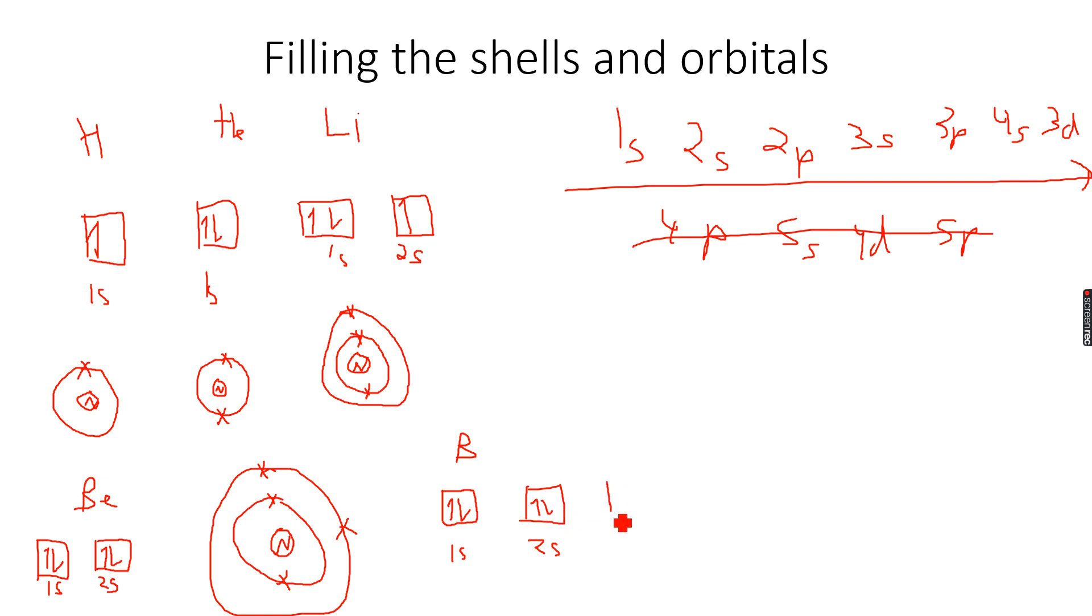Then we go to 2p. The 2p subshell has three orbitals in total. This is the 2p subshell. I'll fill one electron over here in the 2px subshell, so one, two, three, four, and five.